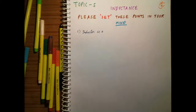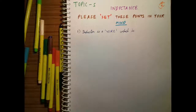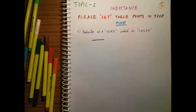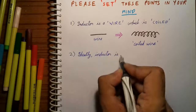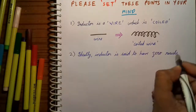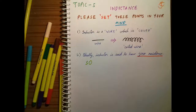Inductance is a wire which is coiled. See this wire which is coiled. Second point: zero resistance, meaning it will not oppose the current. It will not oppose the current.